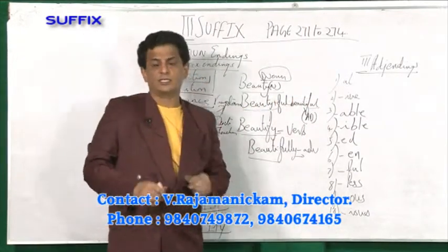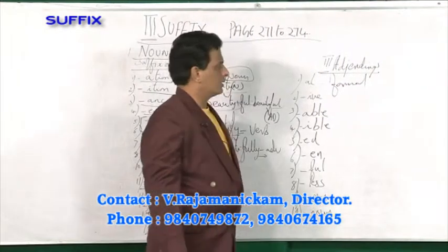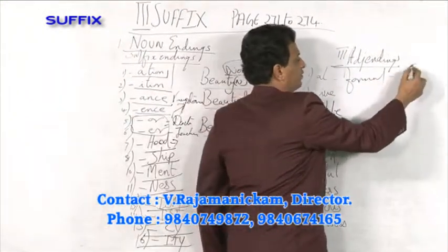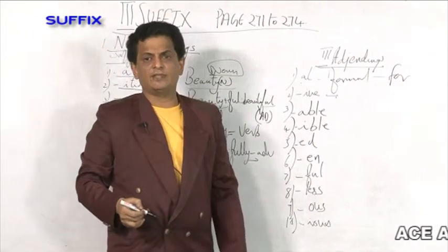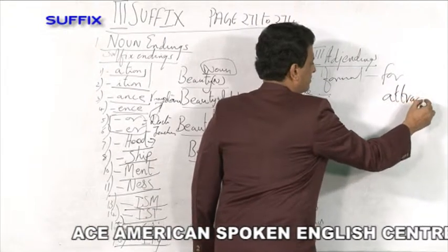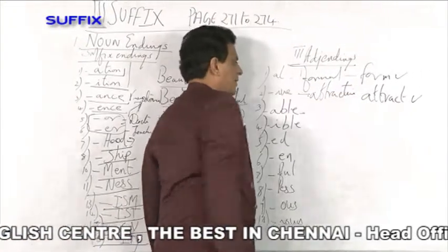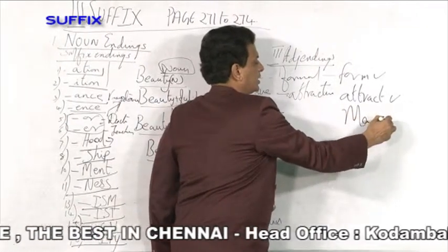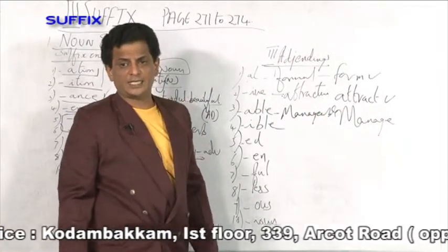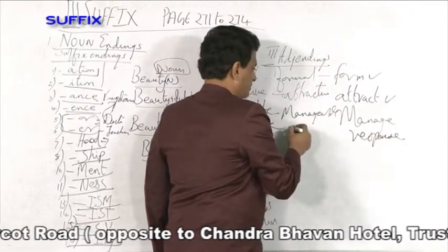Next, adjective endings. Any word ending with '-al' is an adjective — for example, 'formal'. Any word ending with '-ive' is an adjective — 'attractive', which you get from the verb 'attract'. Any word ending with '-able' is an adjective — 'manageable', from the verb 'manage'; 'lovable.' Any word ending with '-ible' is an adjective — 'responsible', which comes from the noun 'response'.